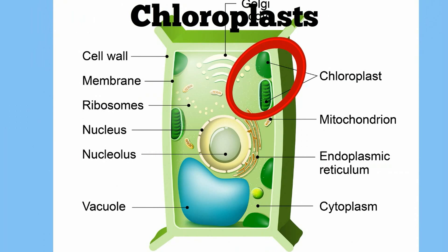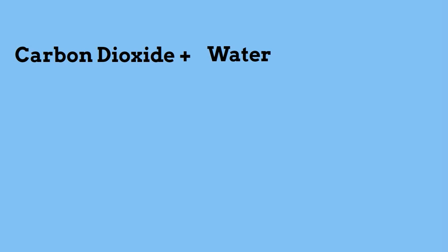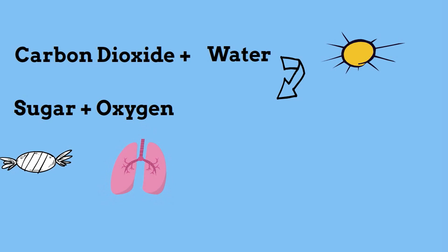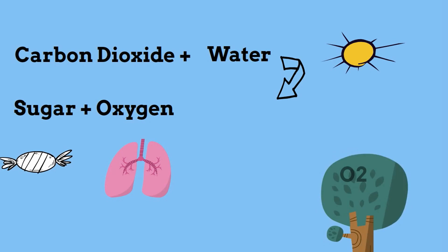A chloroplast takes CO2 and water, adds sunlight, and makes sugar and oxygen which is released.